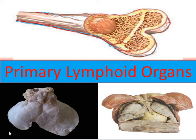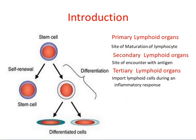In this video we discuss the primary lymphoid organs. A number of morphologically and functionally diverse organs and tissues have various functions in the development of an immune response. Based on their functions, they are categorized as primary, secondary, and tertiary lymphoid organs. Primary lymphoid organs are the site of maturation of lymphocytes.